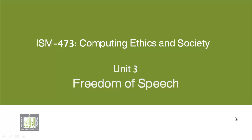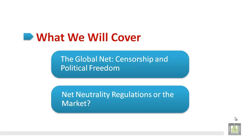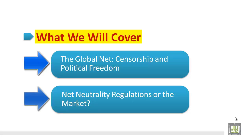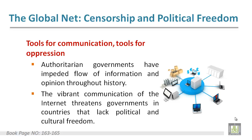Hello everybody, welcome to lecture 9 of our course Computing Ethics and Society. We are still in chapter 3, Freedom of Speech. In this lecture we're going to discuss the following topics: the global net, censorship and political freedom, and the second topic is net neutrality — regulations or the market. Let's get started.